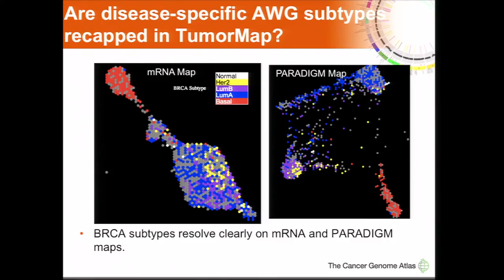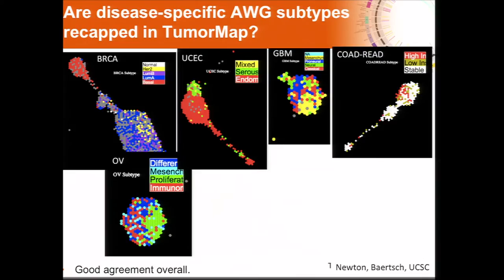This helps you because now you can look up a particular sample you're interested in and look in the zip code where that sample came from, and hopefully there are samples nearby that share molecular similarities with it. So it makes working with this data a lot nicer. On the left is a map zoomed in on the breast cancer samples, and you can see that the basals separate well from the luminals, and the HER2s are clustering in this mRNA space with the luminal B tumors shown in purple. There's another layout derived from pathway space, and we can develop a number of these maps — one for each different platform — and consult the map to see if the AWG subtypes match up to how the map is being laid out.